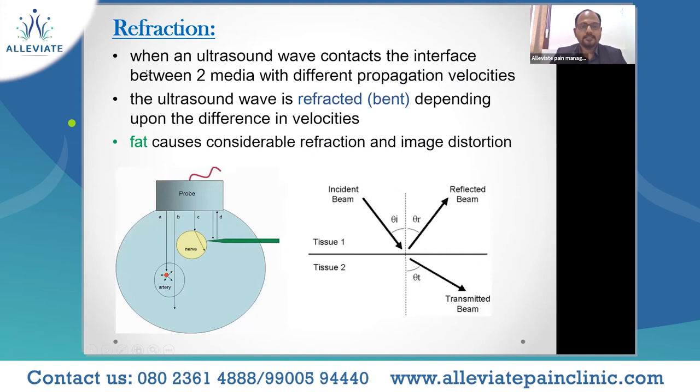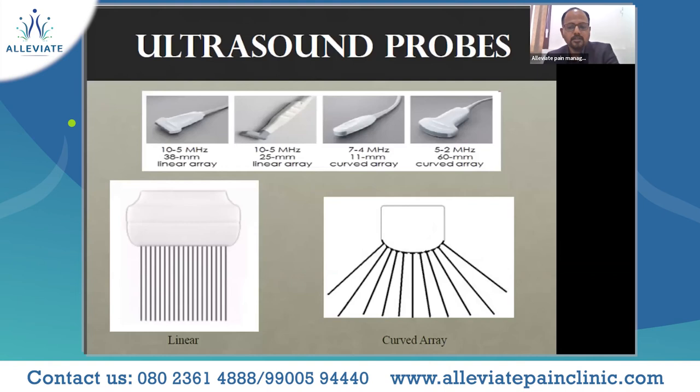Refraction: when an ultrasound wave contacts an interface between two media with different propagation velocities, the ultrasound wave is refracted or bent depending on the difference in velocities. One particular tissue — fat — causes considerable refraction and image distortion. So far we have discussed phenomena like different velocities and different impedances; now let's look at what we actually use — the different probes.